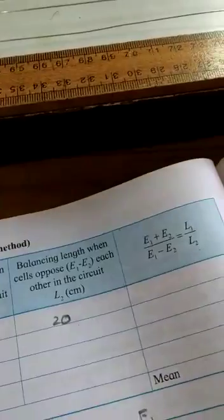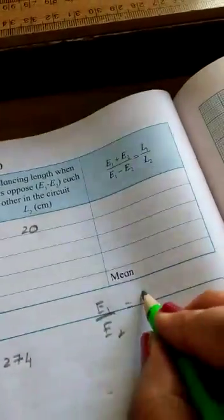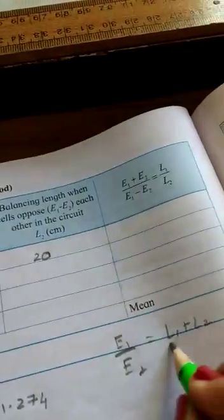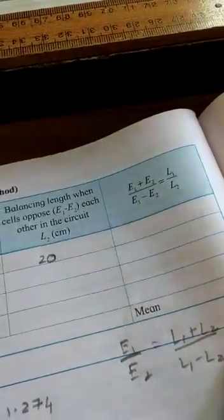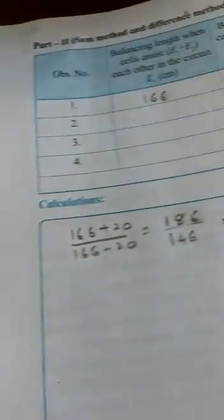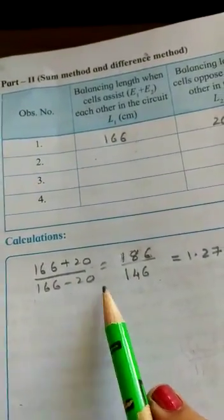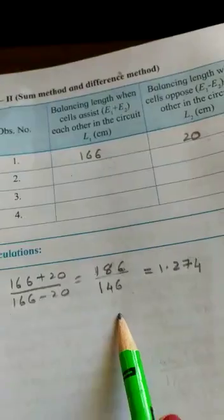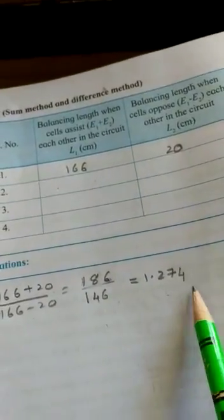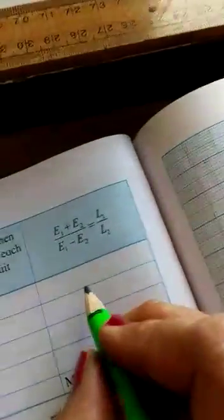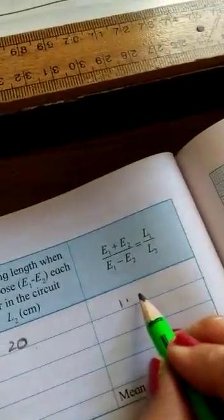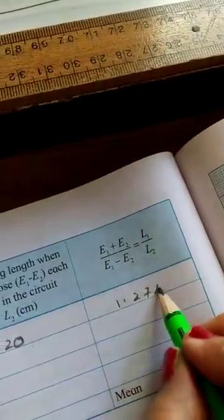E1 upon E2 will be equal to L1 plus L2 upon L1 minus L2. So we put the values 166 plus 20 upon 166 minus 20. That gives it 186 upon 146. That is 1.274. So this value comes out to be 1.274.